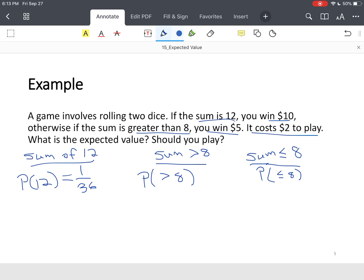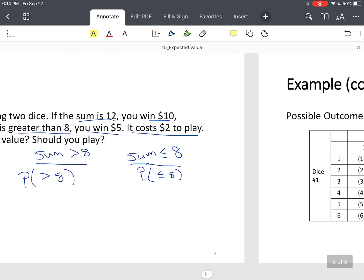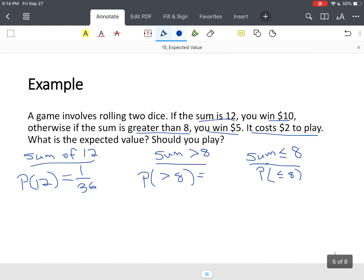And then we need values greater than 8, so sum is greater than 8. Let's see, that's 1, 2, 3, 4, 5, 6, 7, 8, 9. Now don't count the 6 and the 6, because remember, that's an overlapping event. It's greater than 8, but it's also equal to 12. So we don't want to double count. So we've got 9 values, 9 out of 36.